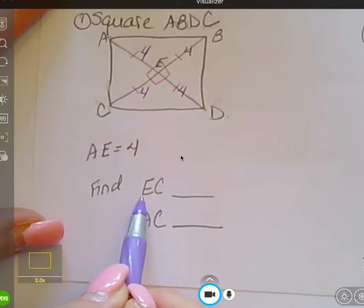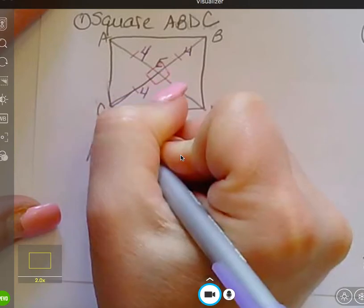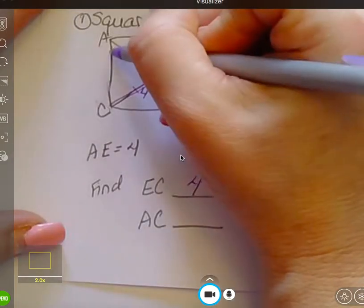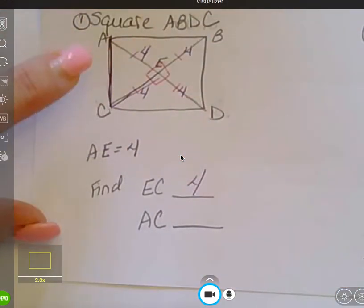I want to find EC. EC. Oh, look. There it is. Well, that guy, four. Done. I already wrote it in. And I want to find AC. Okay, that's going to be a little bit of work. That's this side over here.